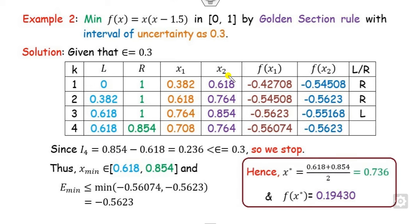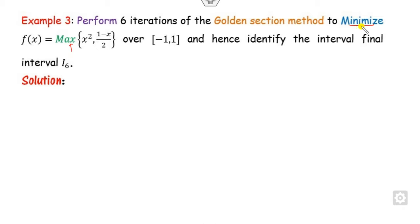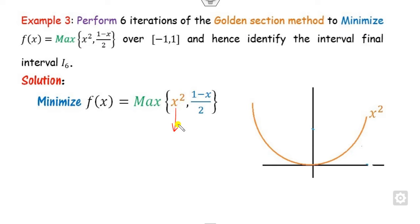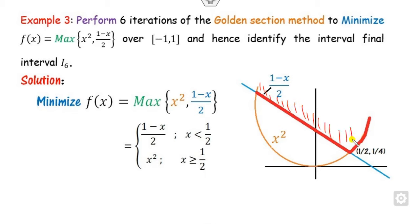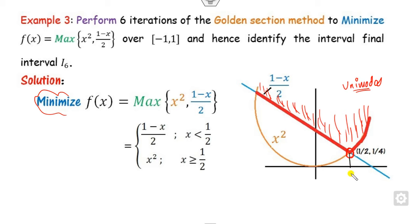The third example involves a maximization problem with two functions. Draw the graph of x² and (1 − x/2). When x = 0, the value is 1/2; when x = −1, it equals 0 or 2, and so on. You want the maximum of the combined function. Since the target is to find the minimum of the negative, check that it is a unimodal function — there is only one minimum, so it is unimodal.